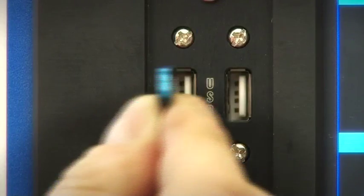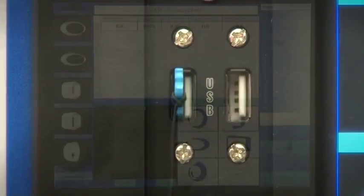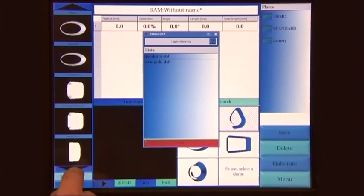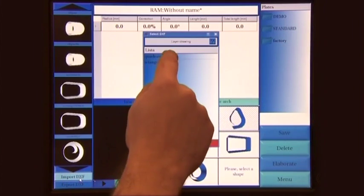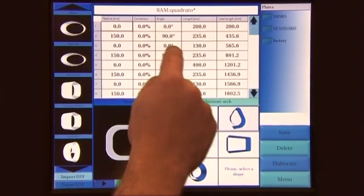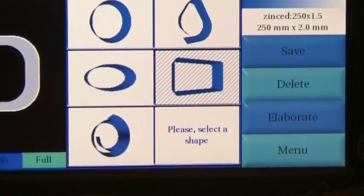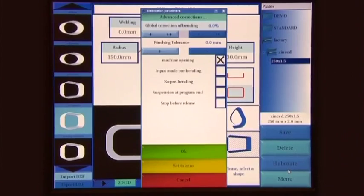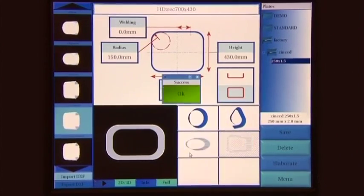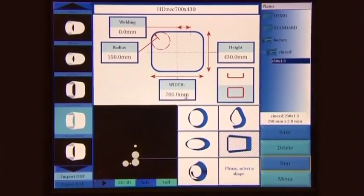It's also possible to import the shape data from a USB flash drive in DXF format. To do this, let's press the import button. Pressing the elaborate button, the automatic generation of the program is started. It's actually performed after the confirmation or change of some basic options.